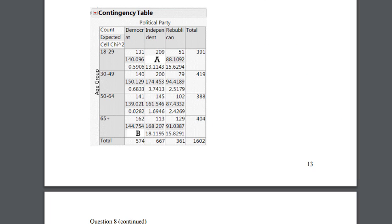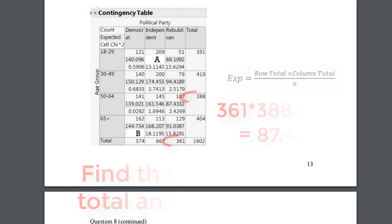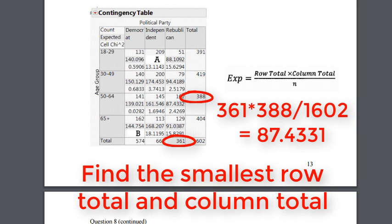Let's take a look to see if we meet the expected cell count condition. Other than knowing all the expected cell counts now, we can also check the smallest cell. We pass because the smallest expected cell is greater than five. And if the smallest expected cell count is greater than five, all expected cell counts are greater than five.